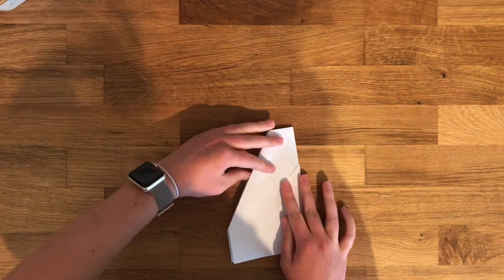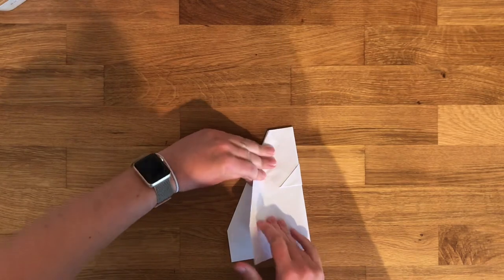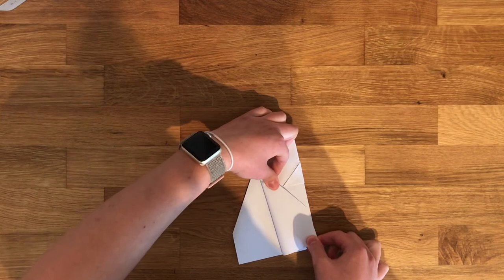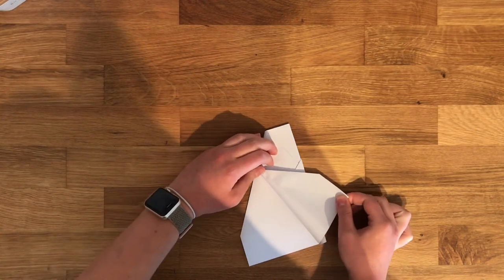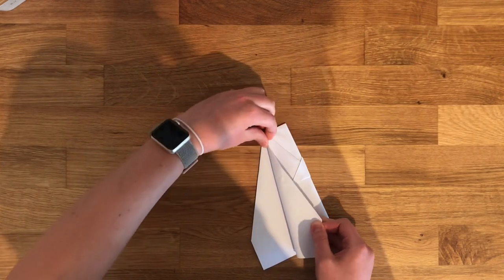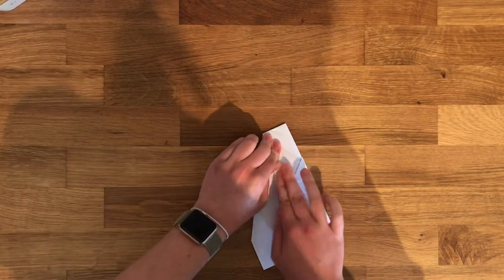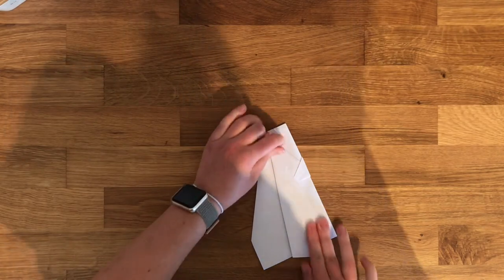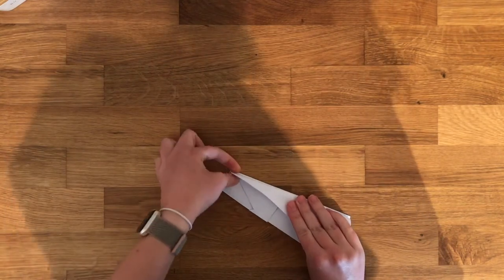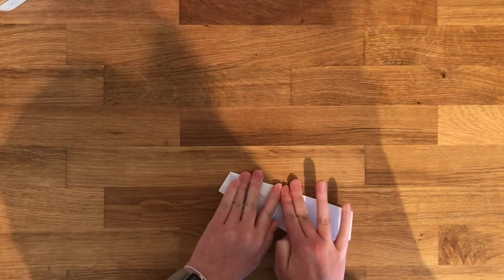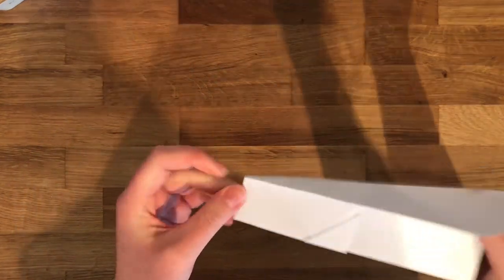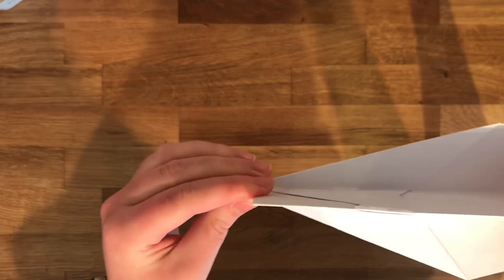Lastly, you are going to take each flap and fold it down to make the wings. Now you don't have to fold it down perfectly flat. You can fold it at an angle or you can fold it up. It's really up to you. I'm going to fold mine at about a bit of an angle. Then you're going to do the other side. Make sure those wings match up with each other. Boom, you've got yourself an acrobatic airplane. This is what it should look like.